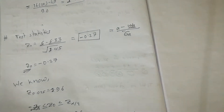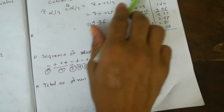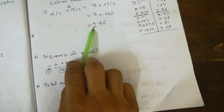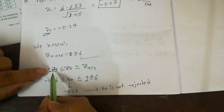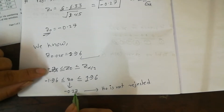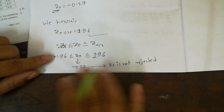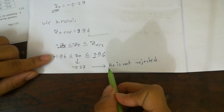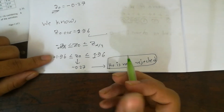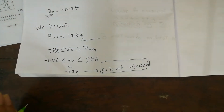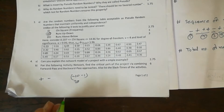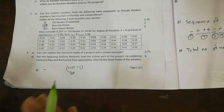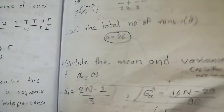The calculated value z₀ = −0.27. The critical values are ±1.96. Since −0.27 lies between −1.96 and +1.96, H₀ is not rejected. This means H₀ is accepted — the data shows independence. The random values given in this example are independently distributed.